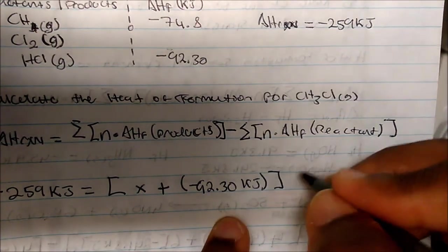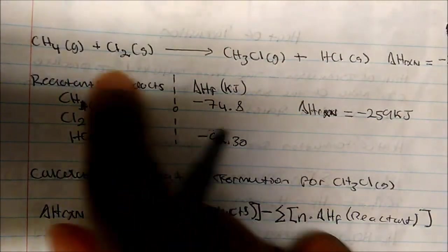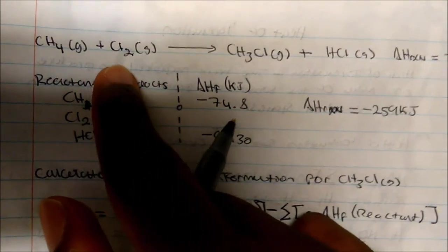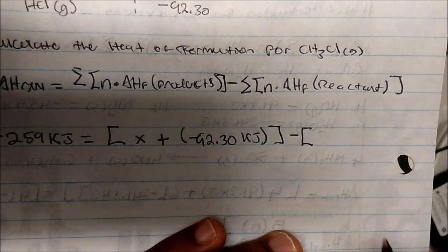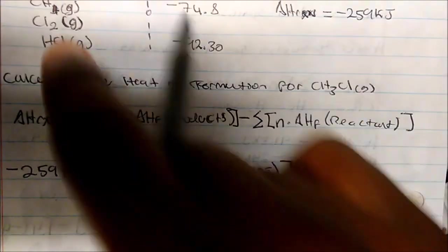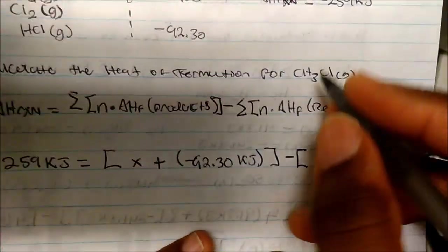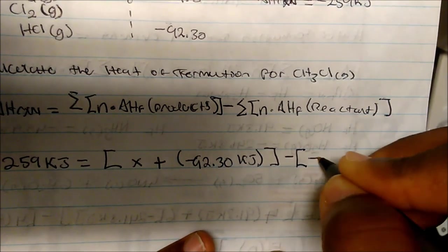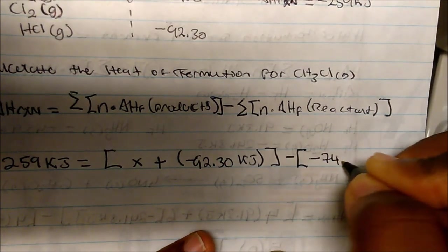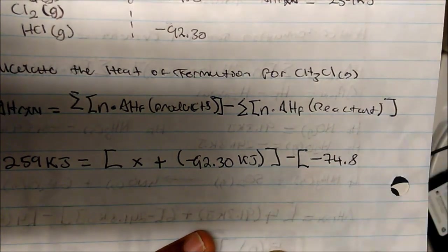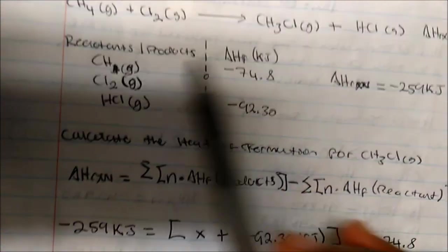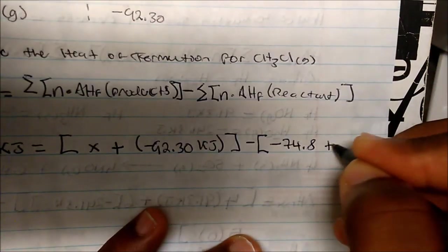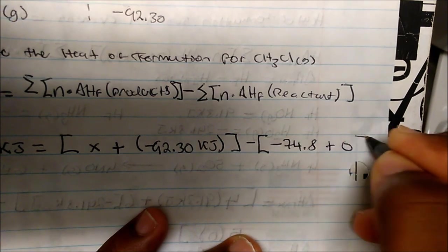We subtract the reactants. All moles are 1 to 1, so no multiplication needed. For methane, that's 1 times its heat of formation, which is negative 74.8 kilojoules. We also have chlorine gas as a reactant, but it's in its elemental form, so its heat of formation is zero.